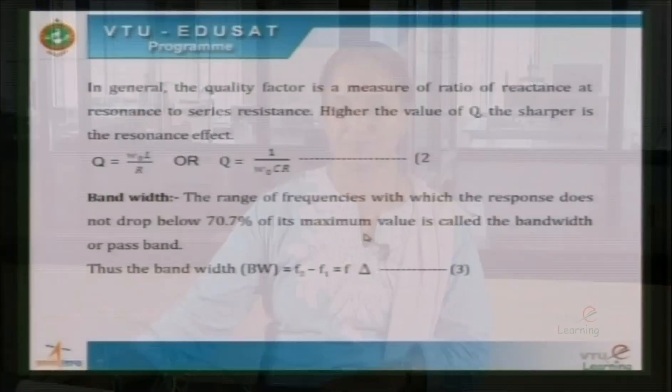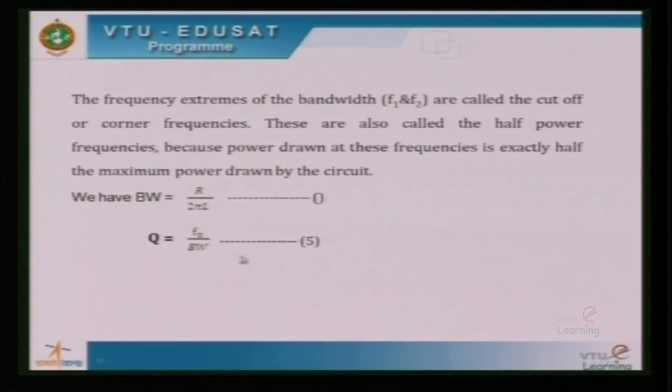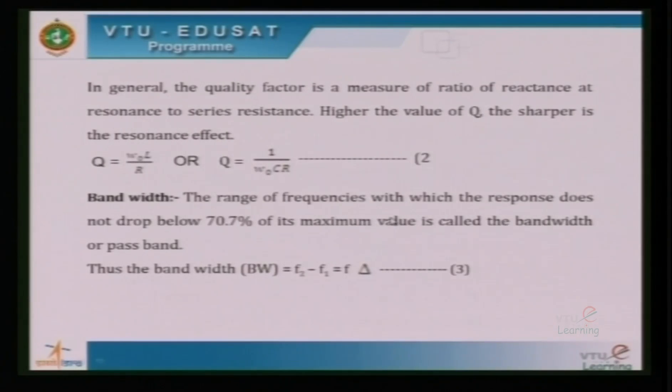The quality factor is given in terms of inductive reactance as ω₀L/R, or in terms of capacitive reactance as 1/(ω₀CR). We can also define quality factor in terms of bandwidth. Practically, from graphical observations, quality factor is given by F₀ divided by bandwidth, where F₀ is the resonant frequency and bandwidth is the range of frequency for which the response does not drop below 70.7% of its maximum value.